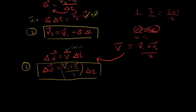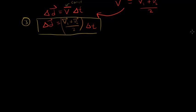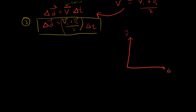Now the fourth equation — we're going to use a velocity-time graph to visualize this. I haven't taught you about kinematics graphs yet; we'll cover that in a future episode. Just play along for now. This is a velocity-time graph where time is on the x-axis and velocity is on the y-axis. An object starts at velocity v1 and accelerates at a constant acceleration — and this is important: all of these equations only work when acceleration is constant.